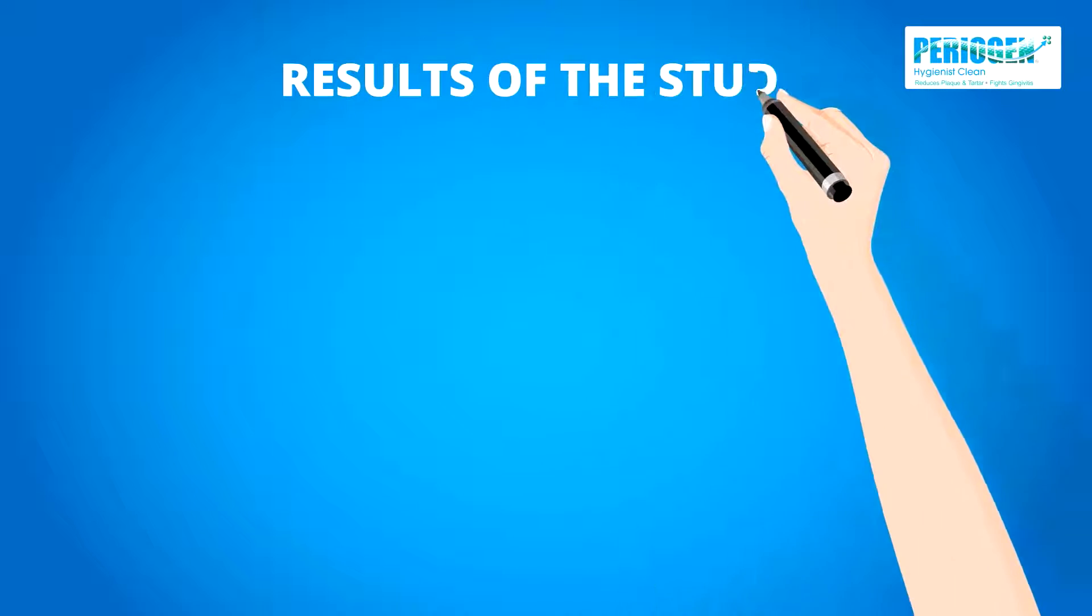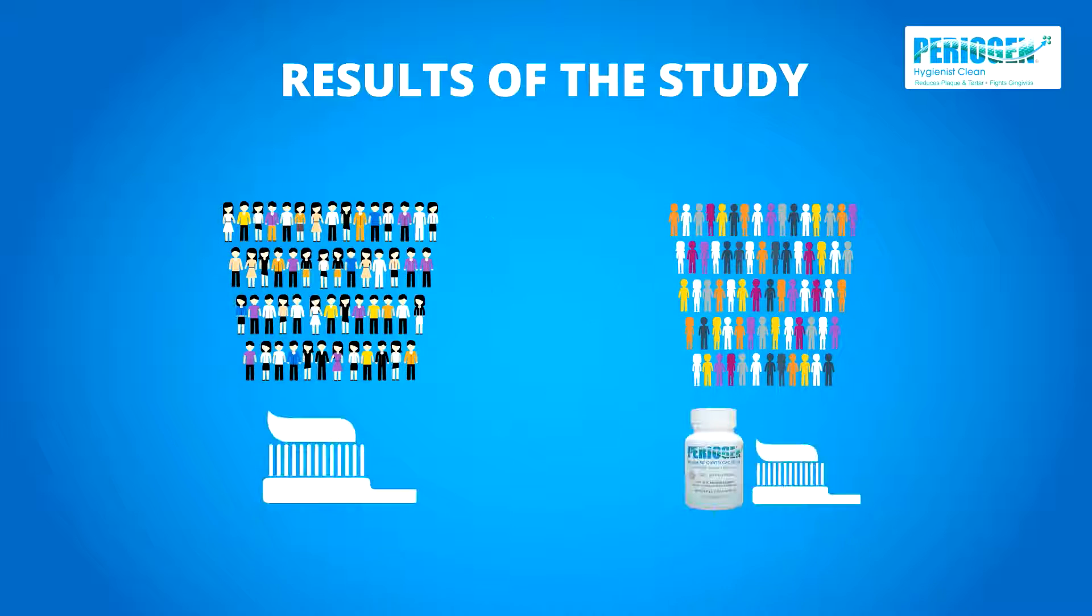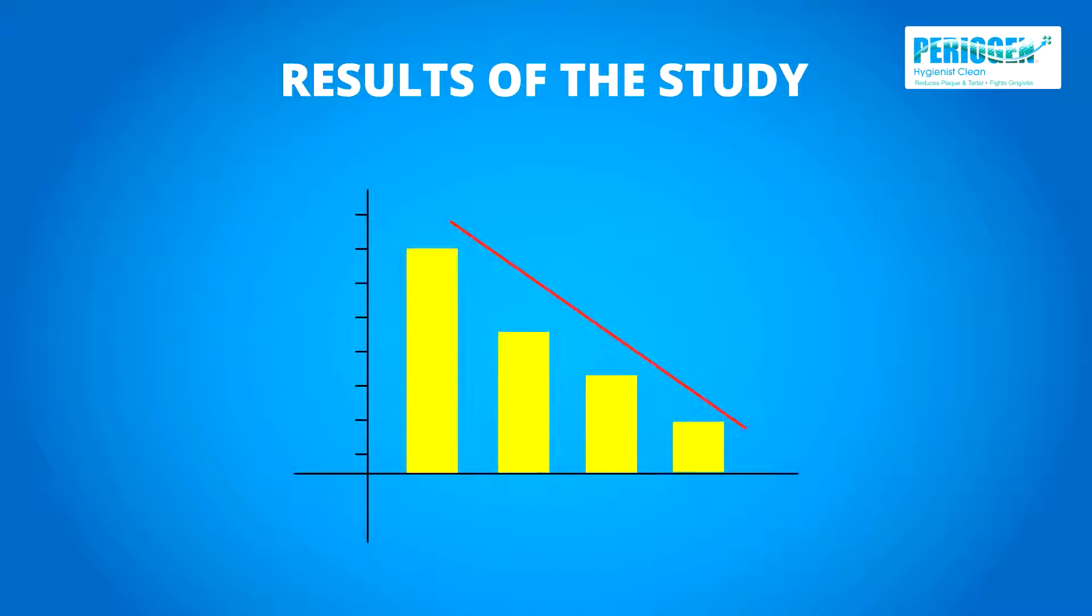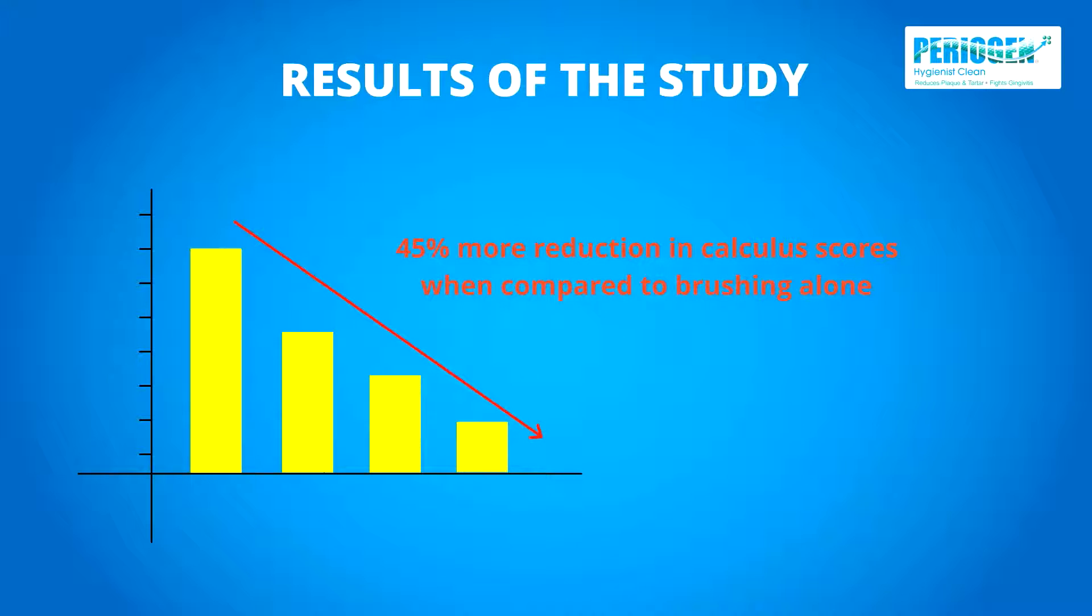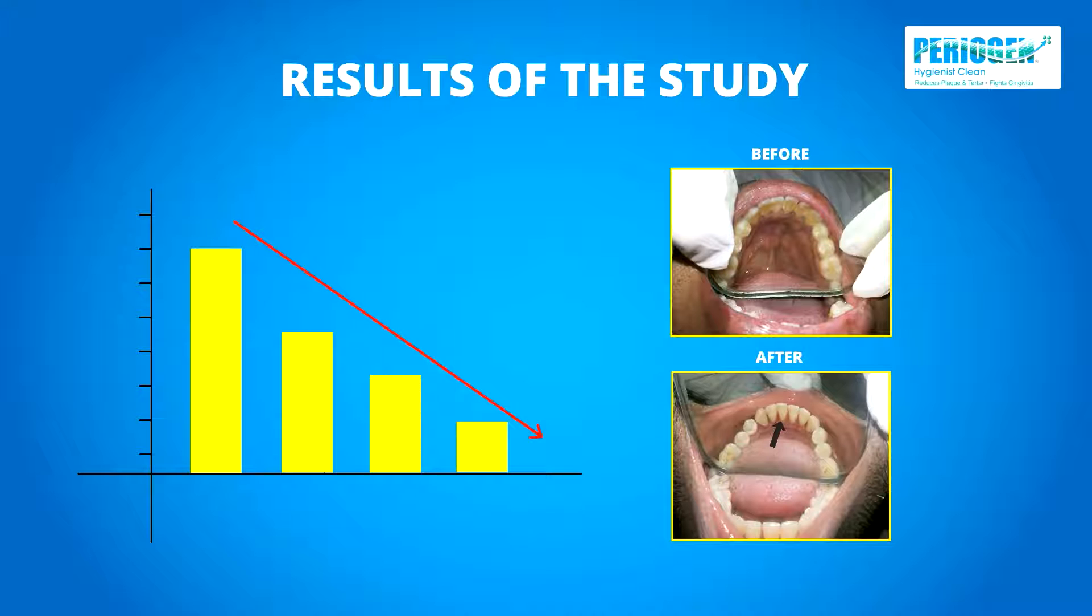Results of the study: Statistical analysis found that the experimental group, which used periogen oral rinse, demonstrated 45% lower scores for calculus or tartar formation than the control group, which used regular dentifrice alone.